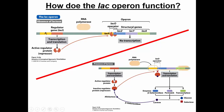You get permease to bring lactose into the cell, beta-galactosidase to process lactose into allolactose and glucose, and transacetylase. The three structural genes are: lacZ, which produces beta-galactosidase; lacY, which produces permease; and lacA, which produces transacetylase. So the lac operon is negative control — when the repressor is bound, there's no transcription. And it's inducible — we go from no transcription to transcription when lactose is present.